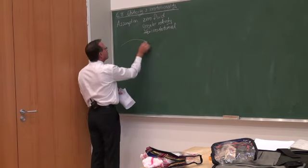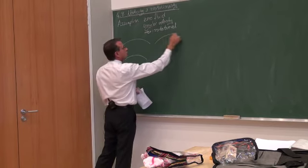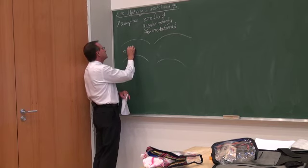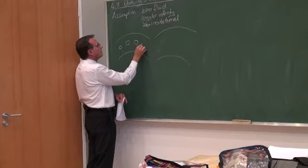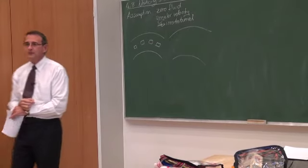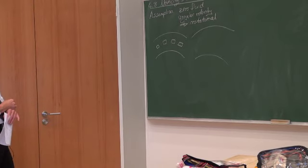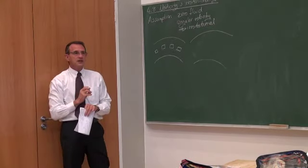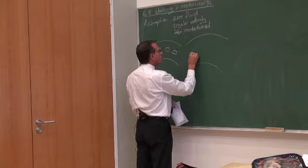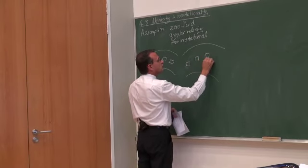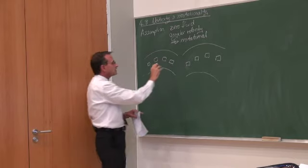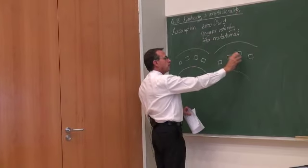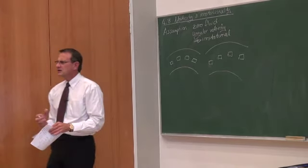Let's consider fluid flowing through a body. If we look at a fluid element, in real life there will be an angular velocity and shear stresses on that fluid element. With irrotational flow, we say those stresses are zero. So if we look at that small control volume, it's going to flow through our flow domain without being deformed.